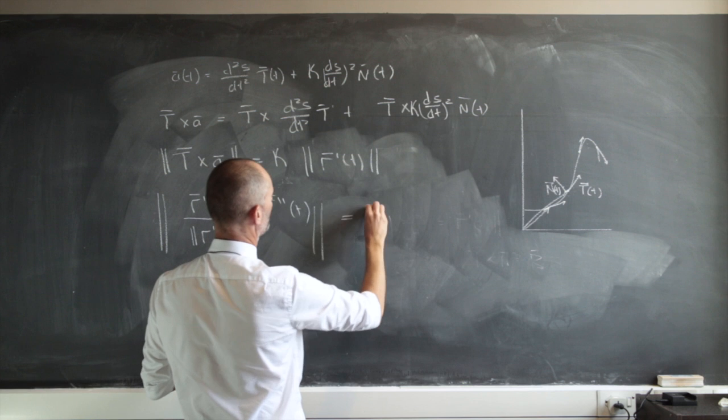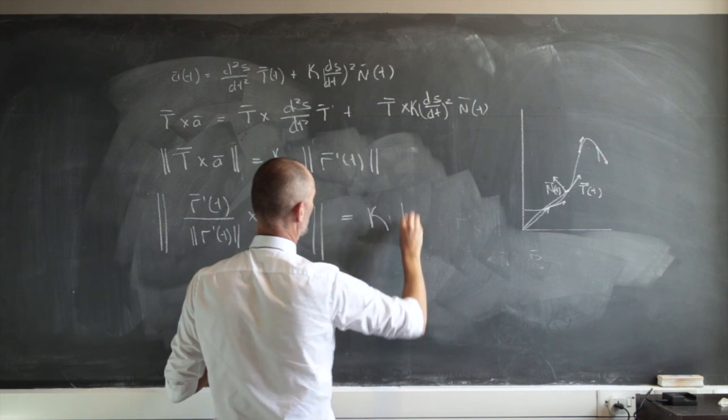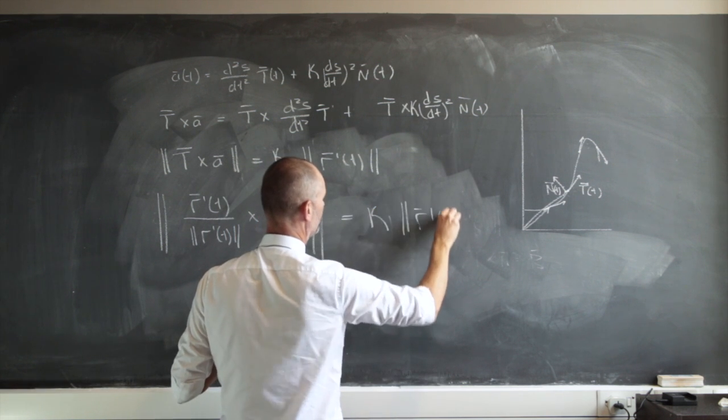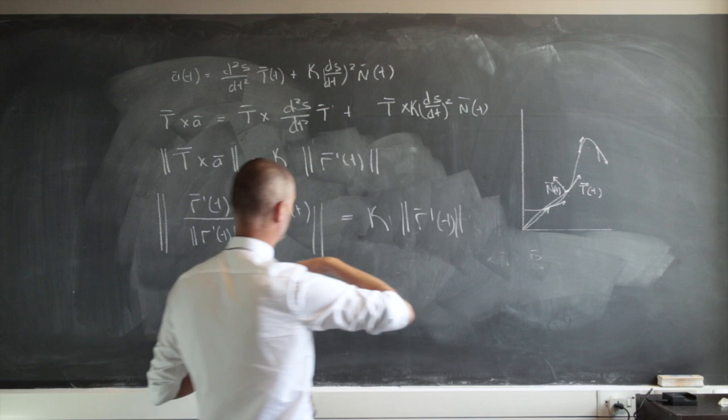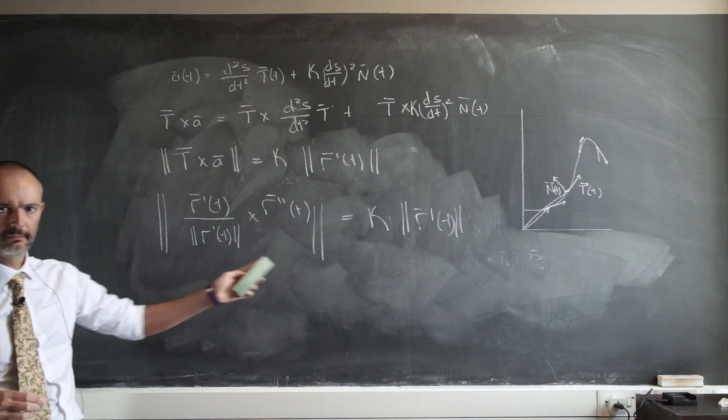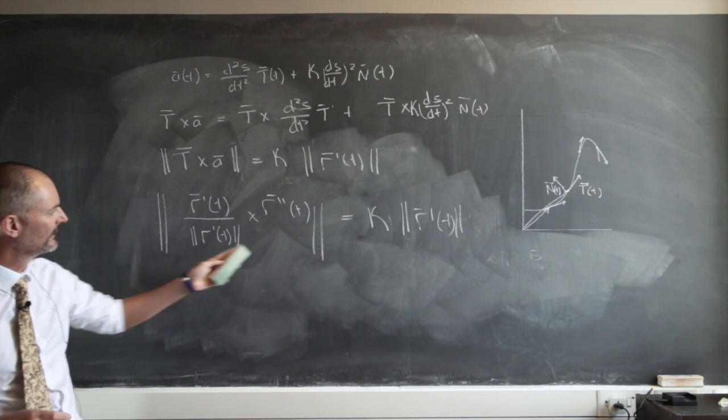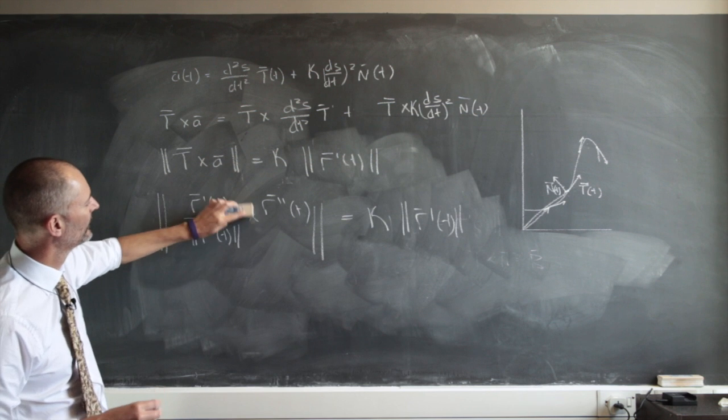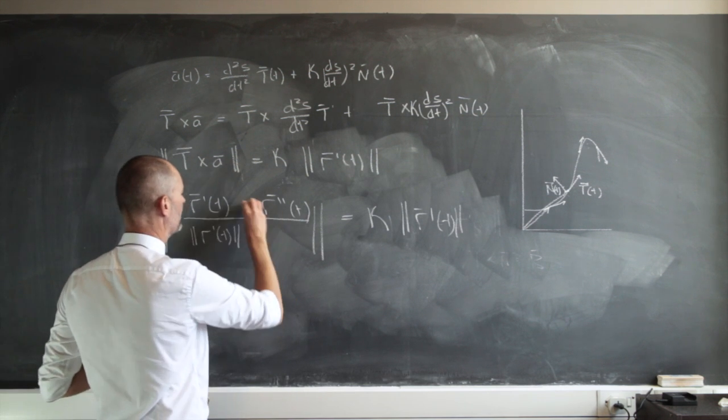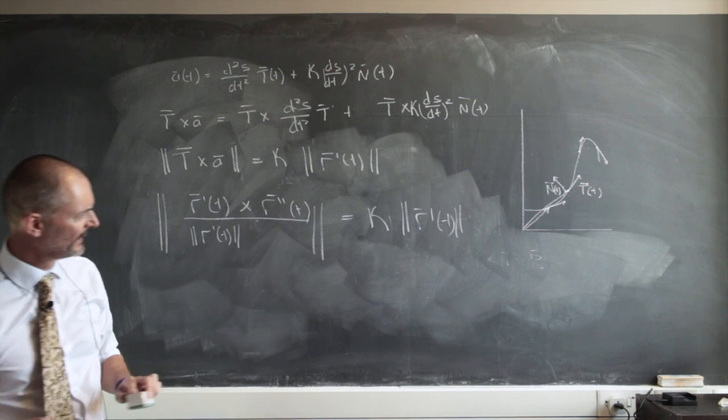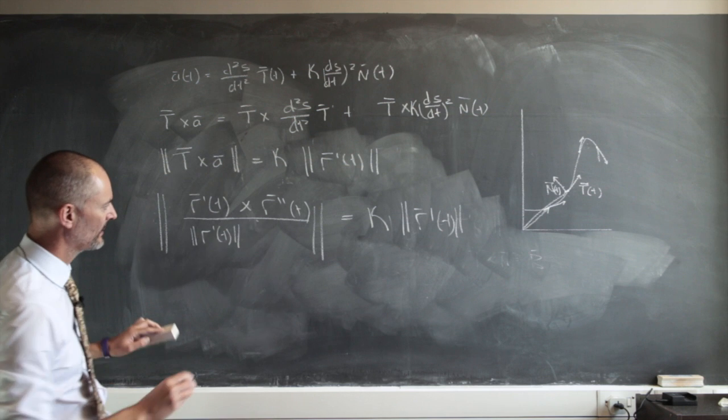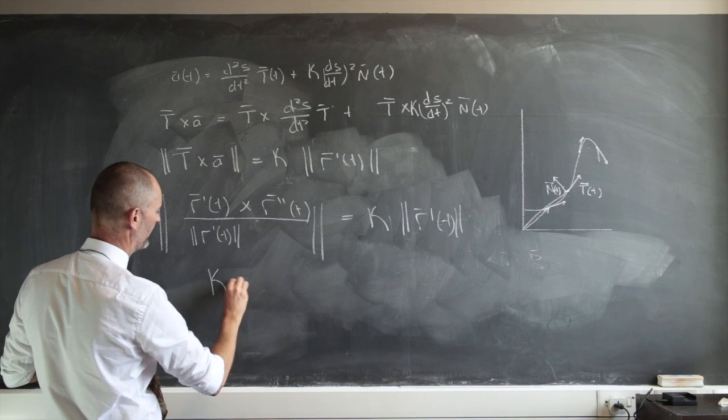And that's going to equal kappa times the norm of r'(t). But here I'm dealing with scalars because I'm taking the magnitude. So to be the same as doing this. And lo and behold out jumps my second equation for kappa.